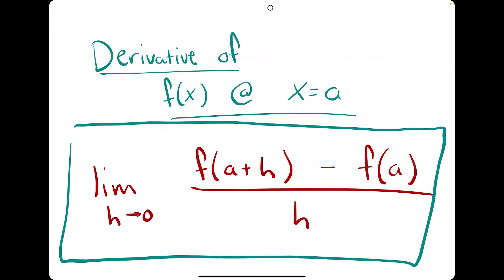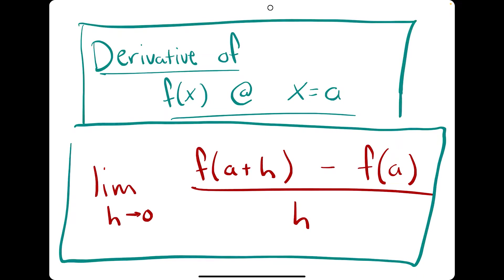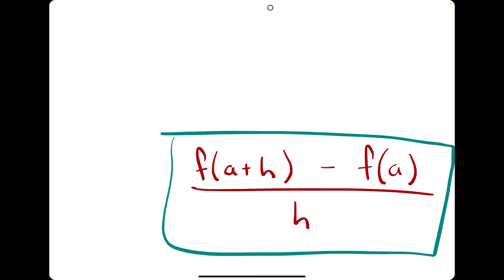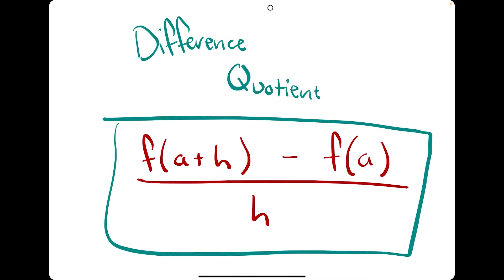Whenever you see this huge limit definition expression, don't be intimidated by it. Just think of it as the derivative of the function f(x) at x equals a — in other words, the slope at one point, that point being a. And one more thing: when we drop the limit out in front and just keep this quotient, this is what's known as the difference quotient.